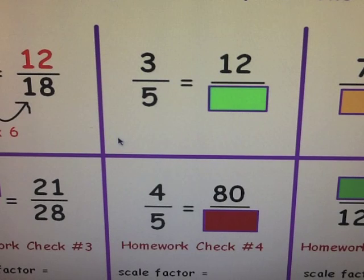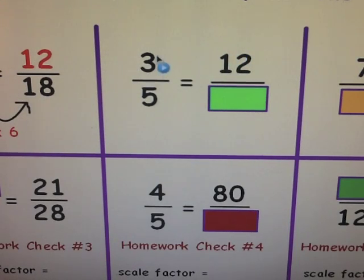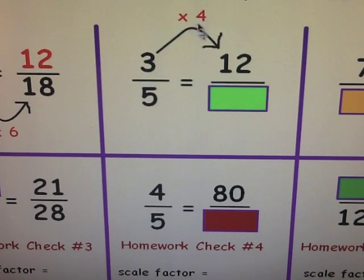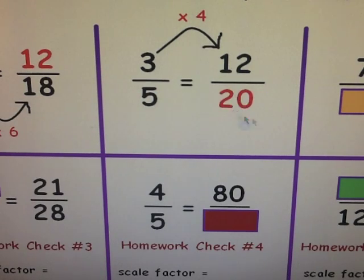Three-fifths is equivalent to some fraction that has twelve as a numerator. You know both numerators — going from three to twelve, you're getting larger so you'll be multiplying. What scale factor can you multiply three by to give twelve? That would be four. Three times four equals twelve, so do the same to the denominator: five times four is twenty. So twelve-twentieths is equivalent to three-fifths.